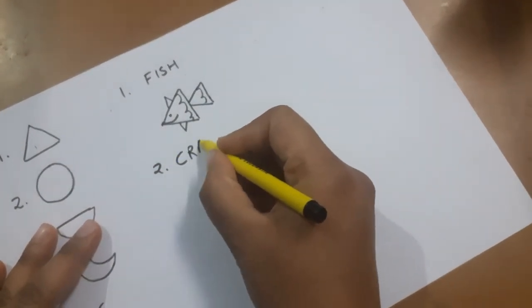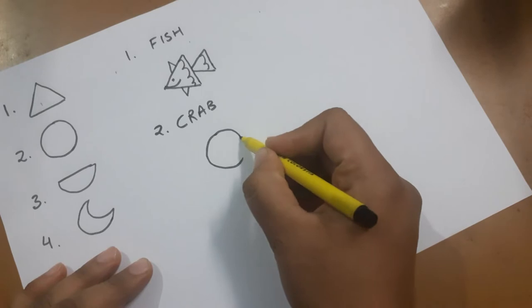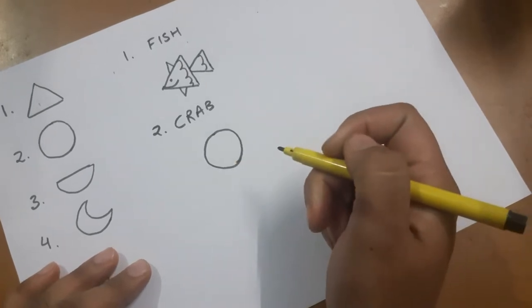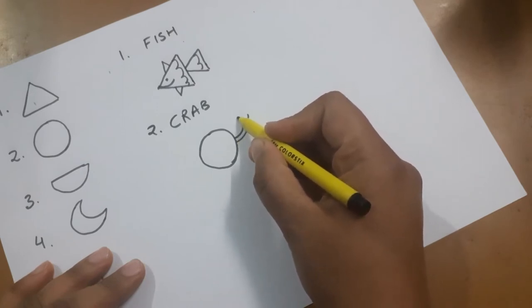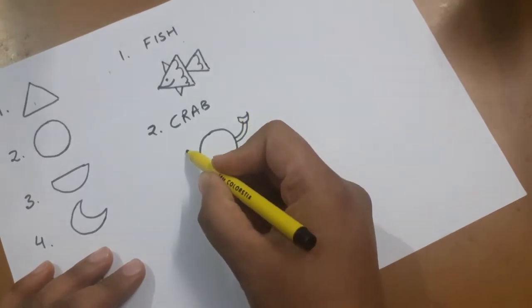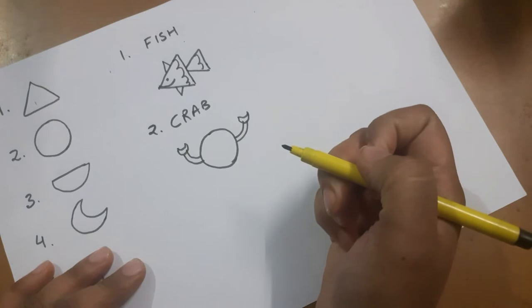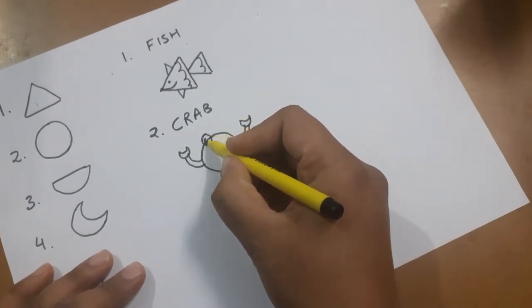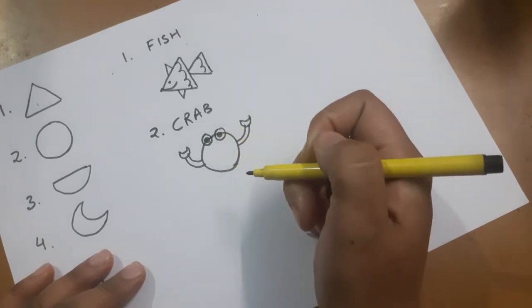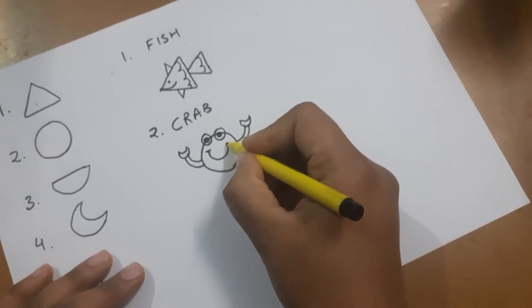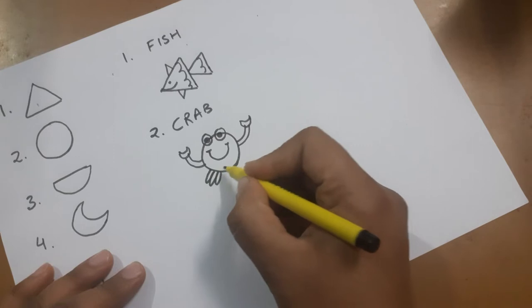Second is crab. Make a circle, then make two curved lines and add a crescent on top to make the hands of the crab. For the eyes, make two circles like this, one inside the other. Add a nice smile and then the legs like this.